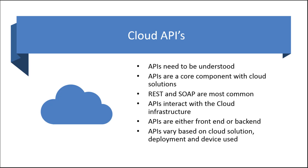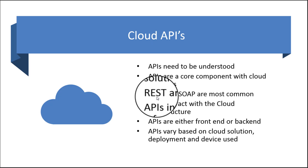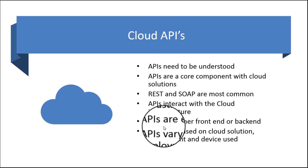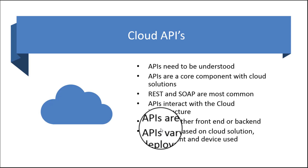APIs do need to be understood for the exam — we need to know what they are, why they're important, and why they're critical to understand even as an architect or engineer. Developers will get this better than folks who don't develop, but basically APIs are the interface between your on-premises services and the cloud services. REST and SOAP are the most common API types, and open API is also very common now — Google supports that, and AWS is starting to get into that space as well. APIs interact with cloud infrastructure, and there are typically front-end APIs and back-end APIs. Be aware that a storage API in AWS will be very different from the one used in Google Cloud or Microsoft Azure.